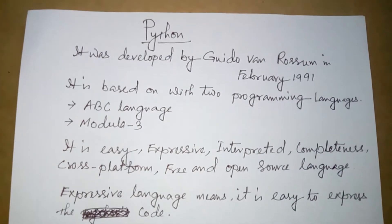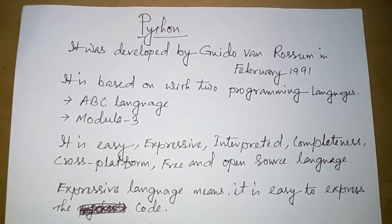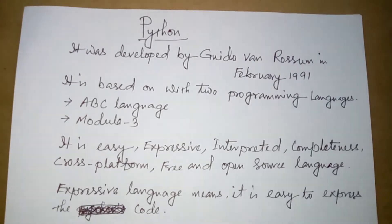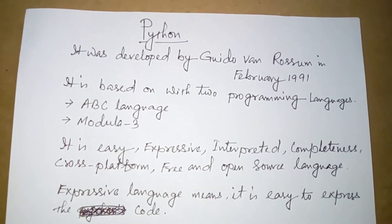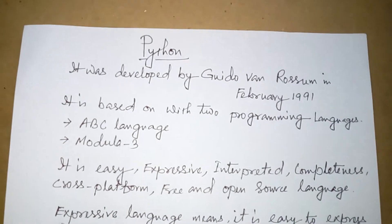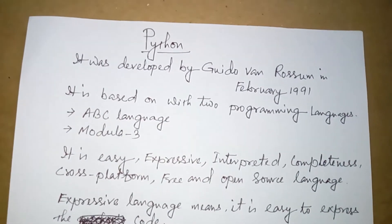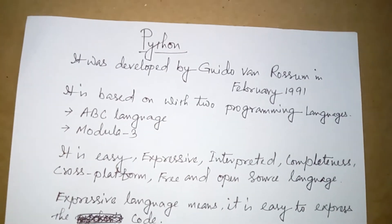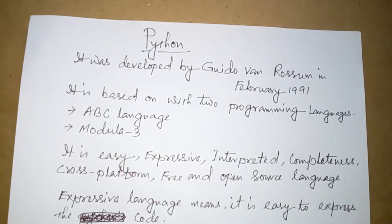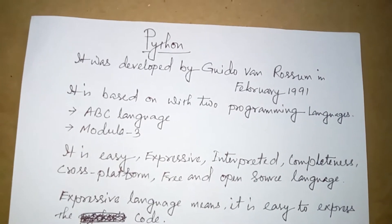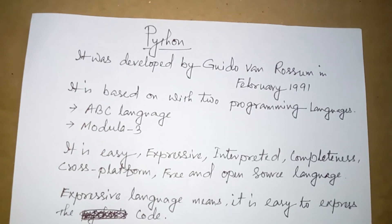Welcome to Python, a programming language. It was developed by Guido van Rossum in February 1991. It is based on two programming languages: ABC language and Modula 3.